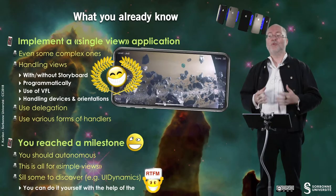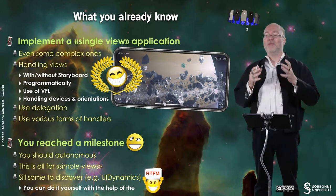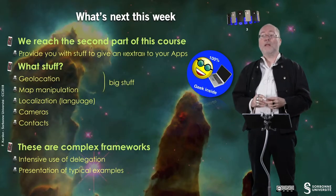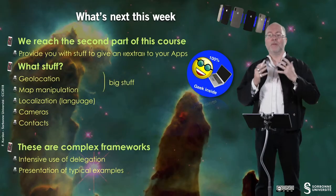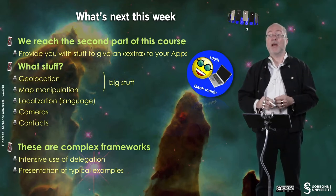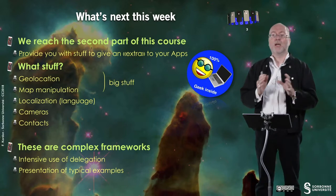And of course, since you know how to navigate in the Fantastic Manual, there is no problem for you. You can get the information from there. So, what's to be done this week? We are starting the second part of this course, and this part aims at providing you with elements to give an extra to your apps. This week we will deal with parts of these elements, which are geolocation and map manipulation — the big stuff.